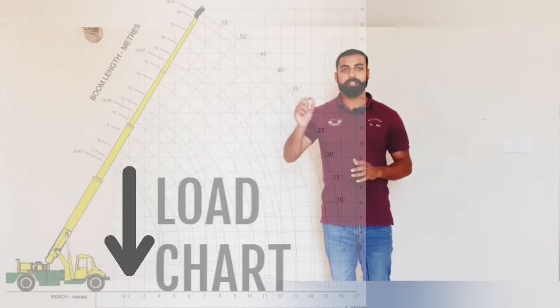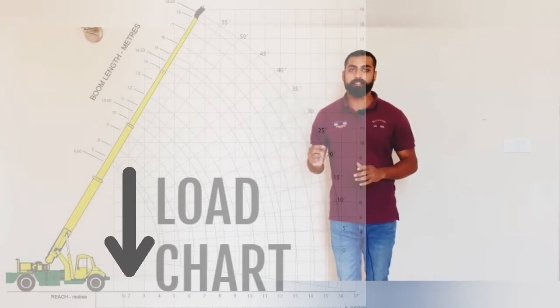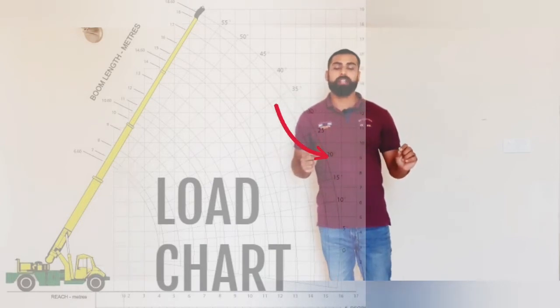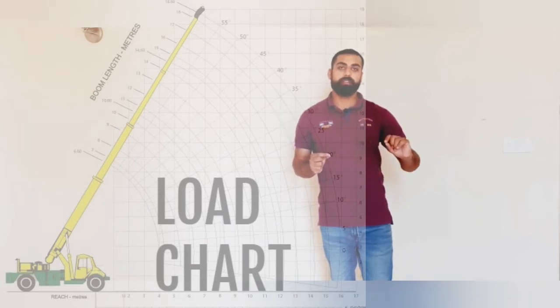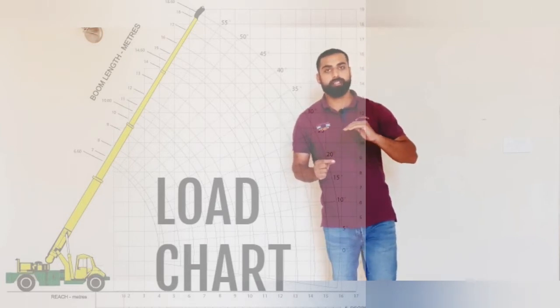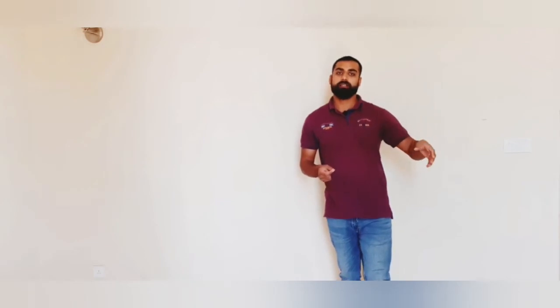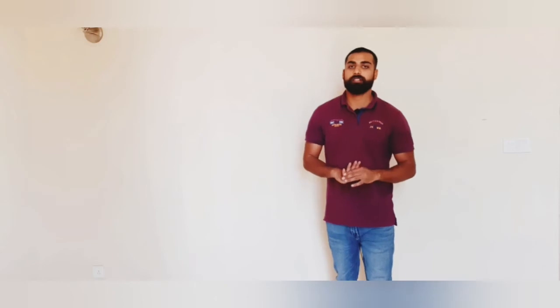Another important question is: what is a load chart? A load chart is a systematic and graphical representation of the maximum load a crane can lift. It has two dimensions — one indicates the boom length and one indicates the radius of the boom. At a particular length and radius, the load-lifting capacity varies. For example, a boom length of 10 meters at a 70-degree angle has a different capacity than the same length at 60 or 55 degrees.